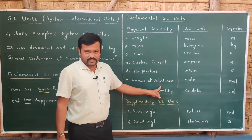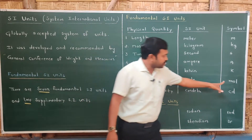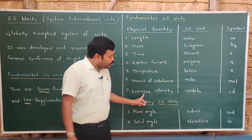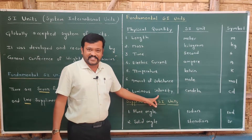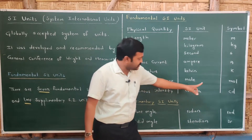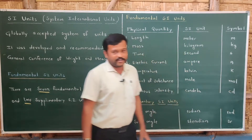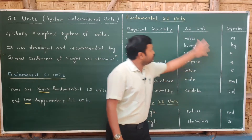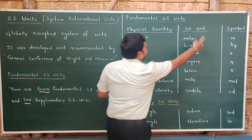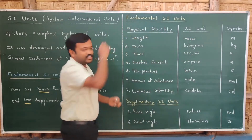Amount of substance is measured in mol, symbol 'mol'. Luminous intensity is measured in candela, symbol 'cd'. So these are the symbols of these SI units, and these are called fundamental SI units.